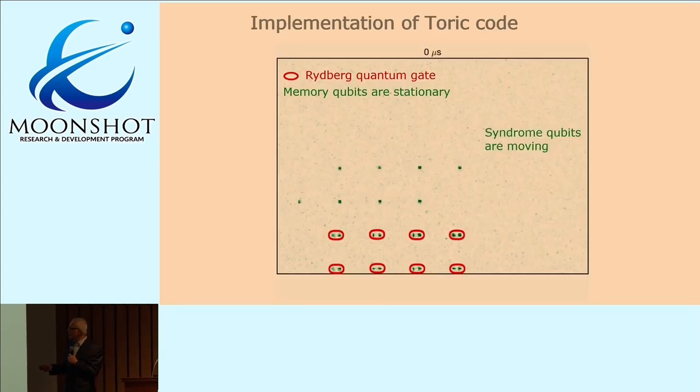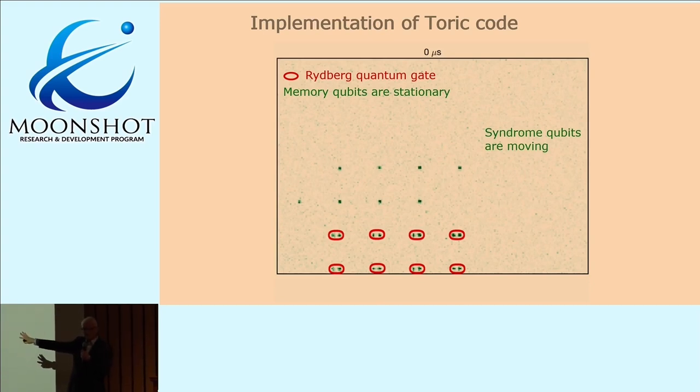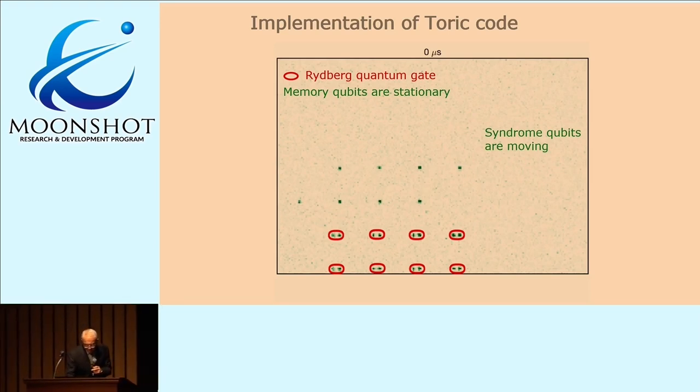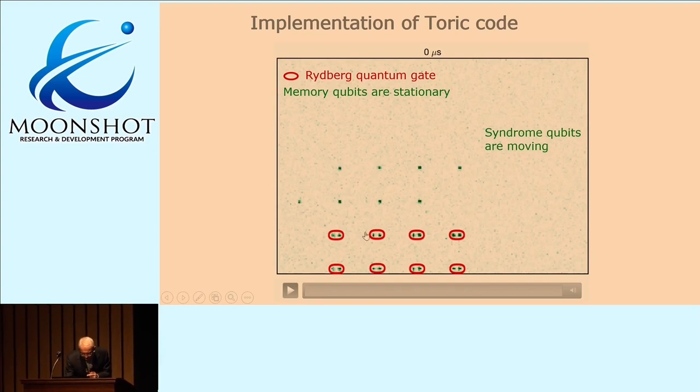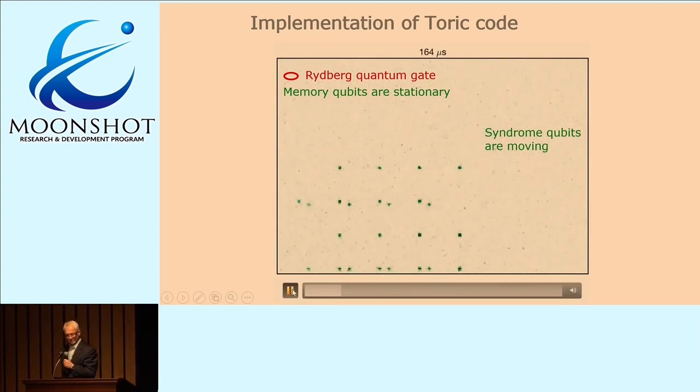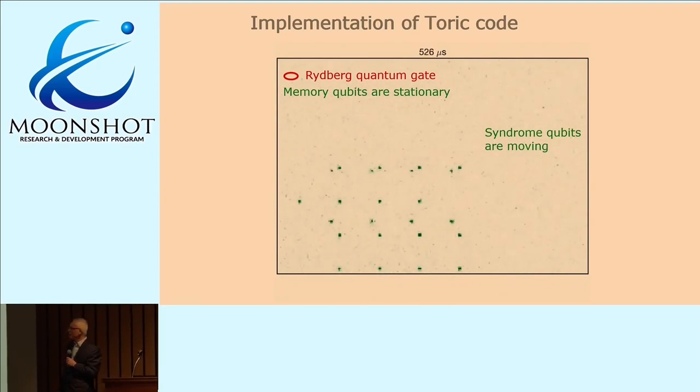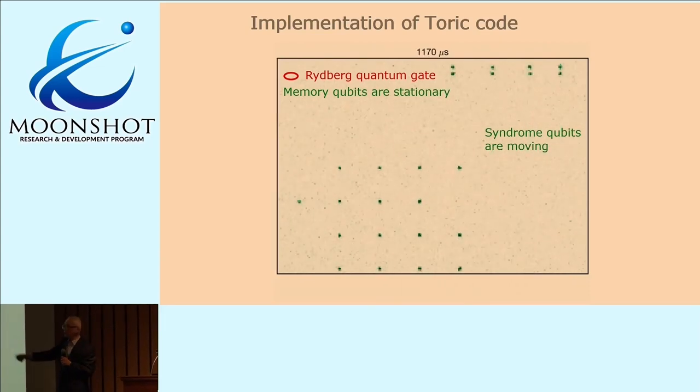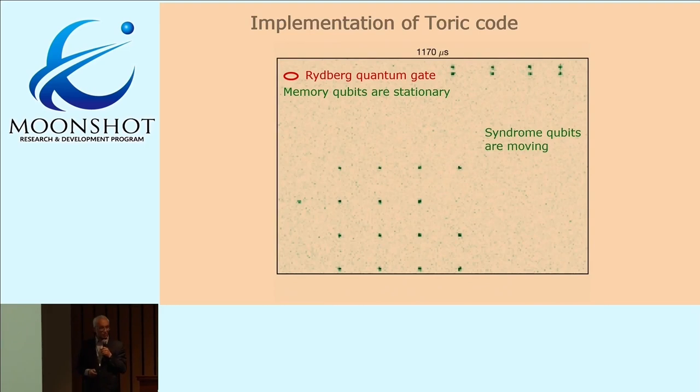What this looks like, I will show you in a movie. This is actually the Toric code implemented. What you will see is stationary atoms. These are the data qubits. Then you will see moving atoms. These are the ancilla measurement qubits that measure the parity. This is a Toric code. Whenever a red circle appears like so, that's the application of a Rydberg gate. So what you will see here is basically one Rydberg gate, and the ancillas are transported second, third, fourth. Then there's one more motion because we need for a torus to bring the atoms all the way around, final Rydberg gate, and then they are transported to a readout zone over here. So basically, this is how we run the code.